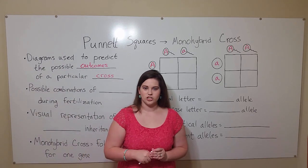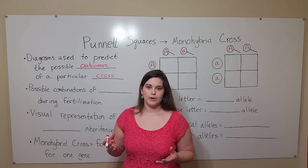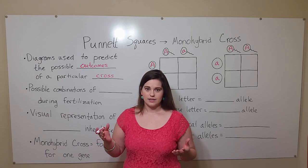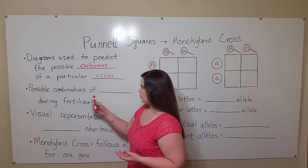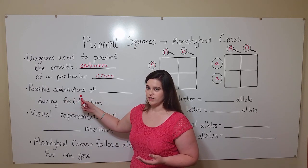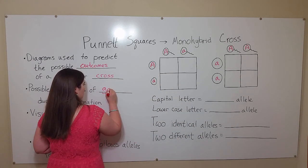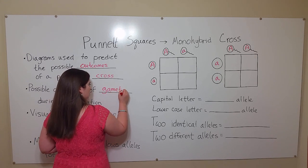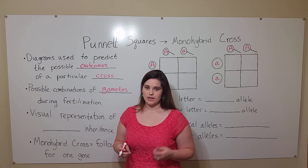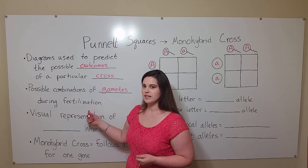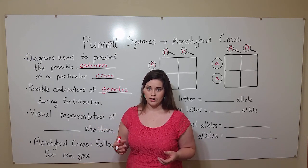A cross in genetics is basically just a type of breeding experiment, where you take two individuals and see the possible outcomes that their offspring can have — basically, possible combinations of gametes during fertilization. Remember that in humans, gametes are the sperm and the egg. Fertilization is the process of uniting a sperm and an egg to create a new individual.